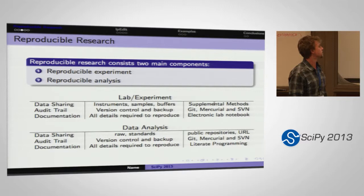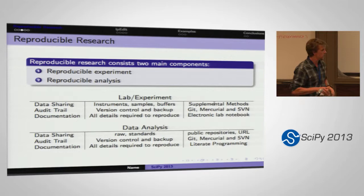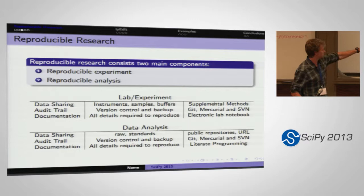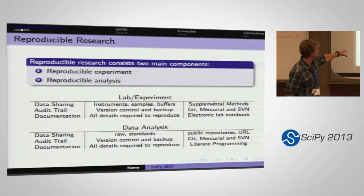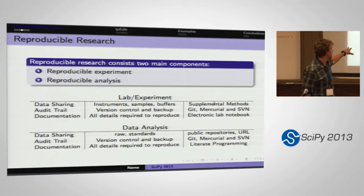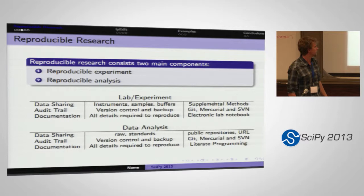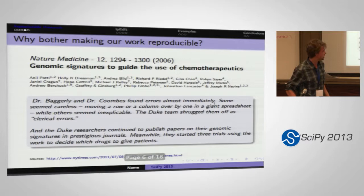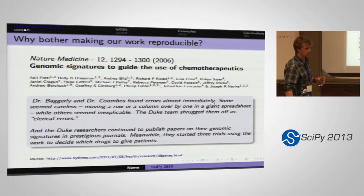I like to distill the idea of reproducible research into three core components: data sharing, audit trail, and documentation. We need to start with data, we need an audit trail — often using Git or Mercurial hosted online — and we need documentation, so people can read the methods in the paper and the supplemental materials. These three concepts have analogous aspects in both the lab setting and in data analyses, and fortunately in computer science we naturally use some of these.